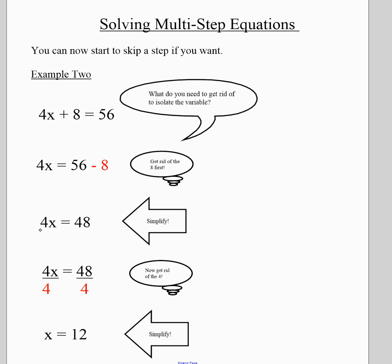Then you simplify. Now you ask yourself, what do I need to do to get rid of the 4? How do I get rid of multiplying by 4? I divide by 4, and I get my final answer.